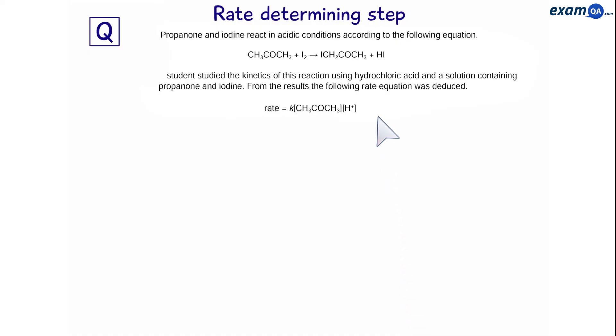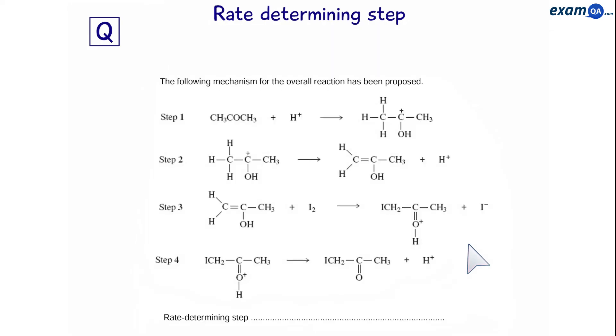Okay, final question. Propanone and iodine react in acidic conditions. And we've been given the rate equation. So, here we have a three step mechanism. Here's the reaction and the rate equation. So, we're looking for one molecule of propanone and one hydrogen ion in the step. And the answer is step 1.